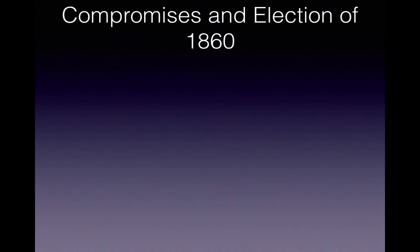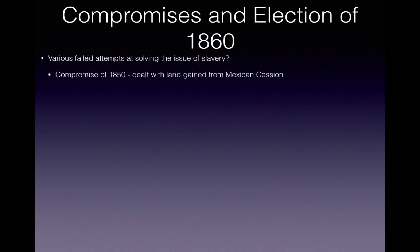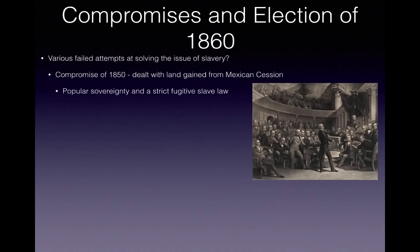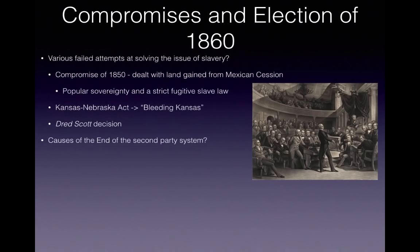Compromises and the election of 1860 — definitely know this. What were various failed attempts at solving the issue of slavery? You have the Compromise of 1850, a result of land gained from the Mexican Cession. Henry Clay instituted popular sovereignty in the Mexican Cession and a strict fugitive slave law, which greatly upset the North and led many to join the abolitionist movement. The Kansas-Nebraska Act led to Bleeding Kansas and overturned the Missouri Compromise, instituting popular sovereignty in Kansas and Nebraska. The Dred Scott decision was an 1857 Supreme Court case which ruled that Congress could not legislate slavery in the territories. I have detailed videos on all three — check them out in the description below.